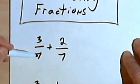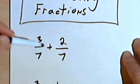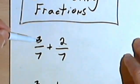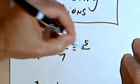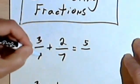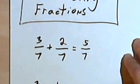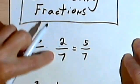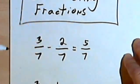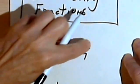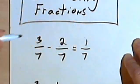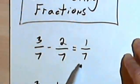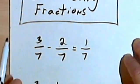So I've got 3 sevenths plus 2 sevenths. 3 plus 2 is 5, and the denominator is going to stay the same. If this was a negative sign — if it was 3 over 7 minus 2 over 7 — I would subtract 3 minus 2, I'd get a 1, and once again the denominator would stay the same.